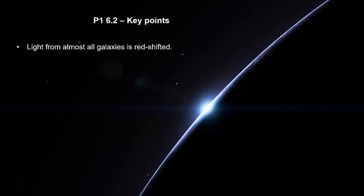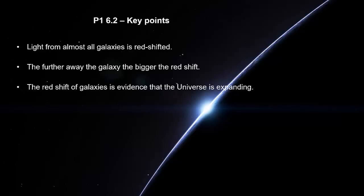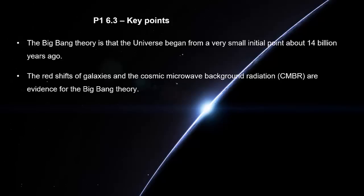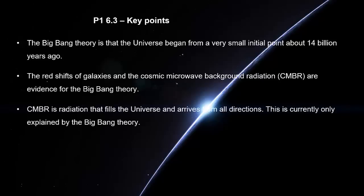Light from almost all galaxies is redshifted. The further away the galaxy, the bigger the redshift. The redshift of galaxies is evidence that the universe is expanding. The Big Bang theory is that the universe began from a very small initial point about 14 billion years ago. The redshifts of galaxies and the cosmic microwave background radiation are evidence for the Big Bang theory. Cosmic microwave background radiation is radiation that fills the universe and arrives from all directions. This is currently only explained by the Big Bang theory.